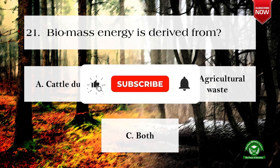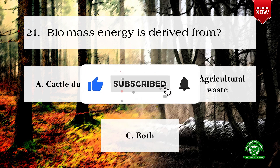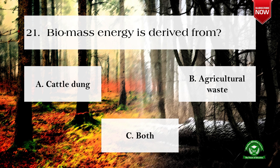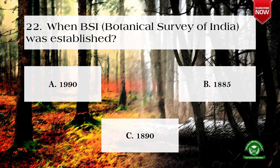Next question: biomass energy is derived from — options are: a) cattle dung, b) agricultural waste, c) both. The right option is c) both. Next question: when was BSI, that is Botanical Survey of India, established? Options are: 1990, 1885, and 1890. The correct option is c) 1890.